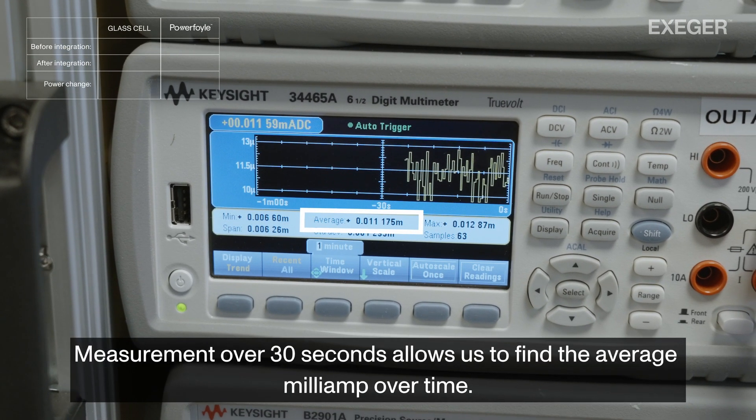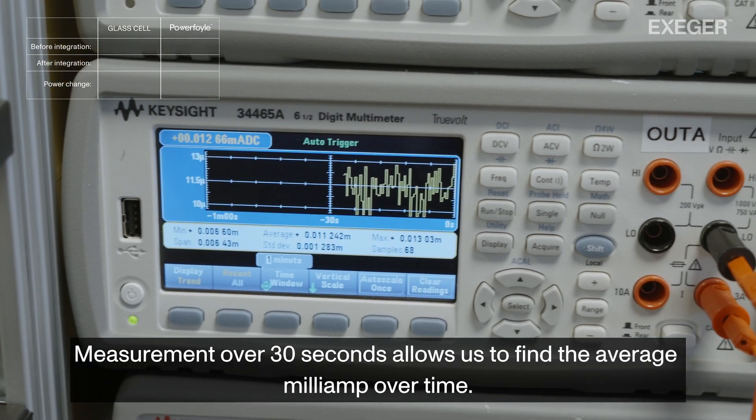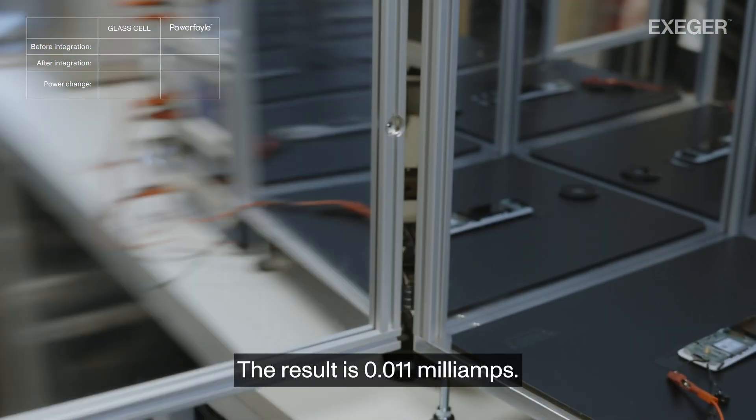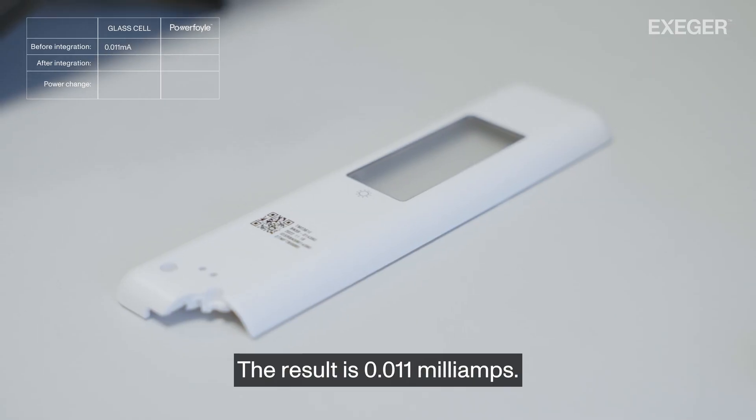Measurement over 30 seconds allows us to find the average milliamp over time. The result is 0.011 milliamps.